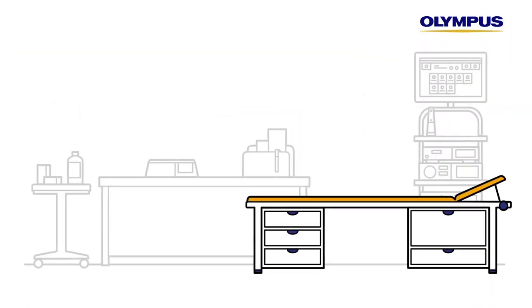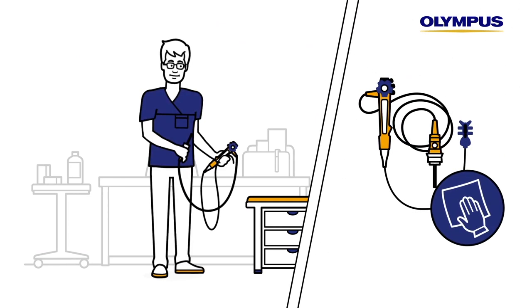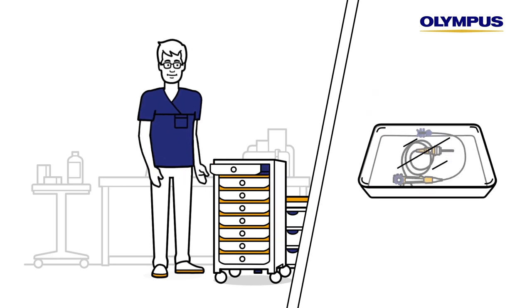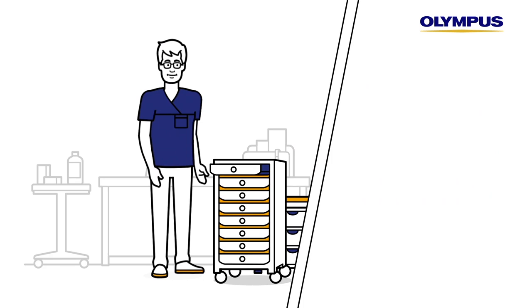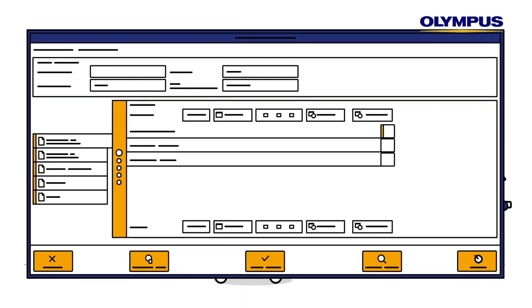Once the endoscopic procedure of a patient is finished, the examination room assistant wipes the endoscope and rinses it. They then put the endoscope into a transport tray and seal it with foil. In order to document this in HITRAC, the assistant and the endoscope are identified by means of RFID technology.